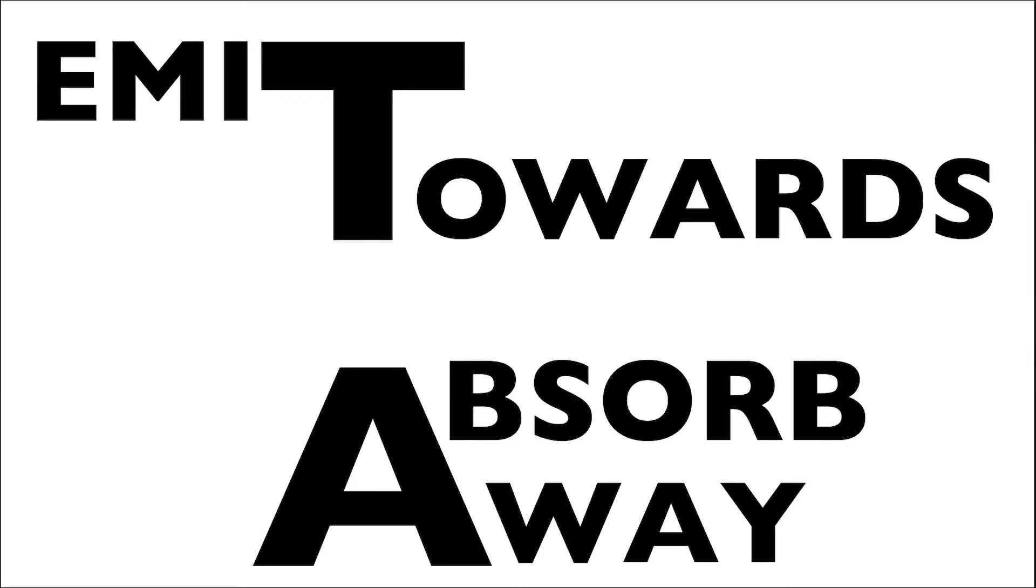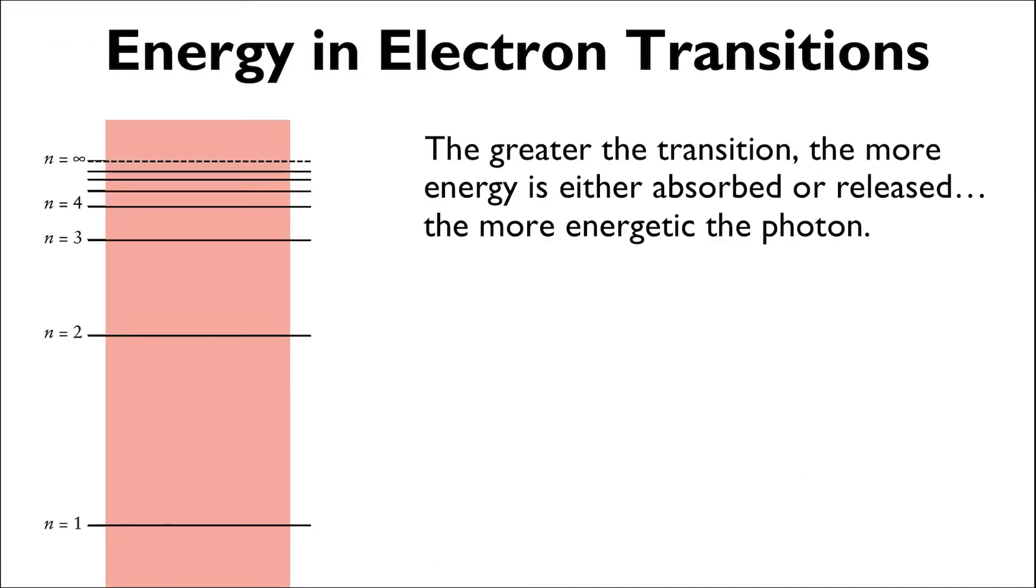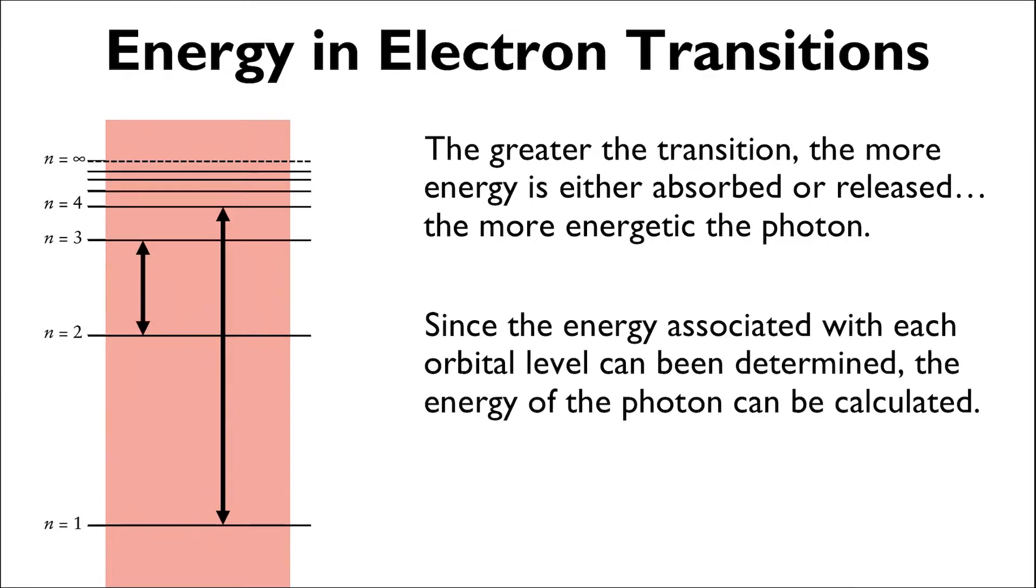One way to remember which action is associated with which electron transition is to remember these two pairs of words: emit towards, and absorb away. When electrons jump from one energy level to another, the greater the jump, the more energy is associated with that jump. The photon involved in that transition will also have a higher energy than a photon involved in a smaller transition. In fact, we can actually calculate the exact amount of energy of each of these photons that are either emitted or absorbed, since the energy values of each of these orbitals are actually known. Knowing this energy, we can then determine the wavelength of the photons by using E equals hc over lambda.